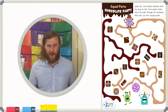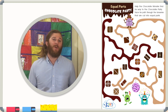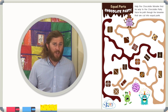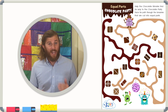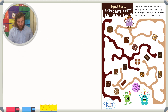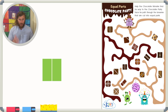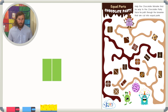Before we get started, we have to ask ourselves: what does equal parts really mean? Let's take a look at an example of a shape that's cut into equal parts. For our first shape, we have a square, and this square is cut into two equal parts. We know they're equal parts because the two parts are exactly the same size — they take up the same amount of shape, and they're exactly one half of the square each.